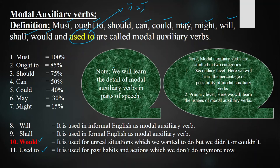Before starting 'would', there is a note: we will learn the detail of modal auxiliary verbs in parts of speech. When we study parts of speech, verbs have got 20 plus kinds. One of them is known as the modal auxiliary verb. Auxiliary verbs have got three to four kinds, one of which is called the semi-modal.